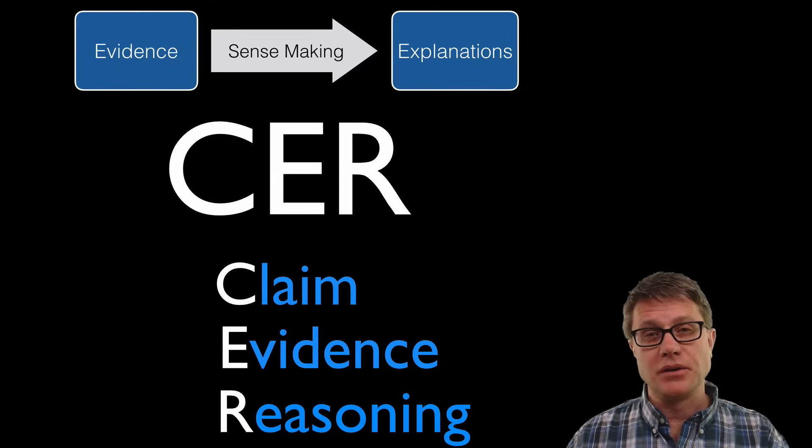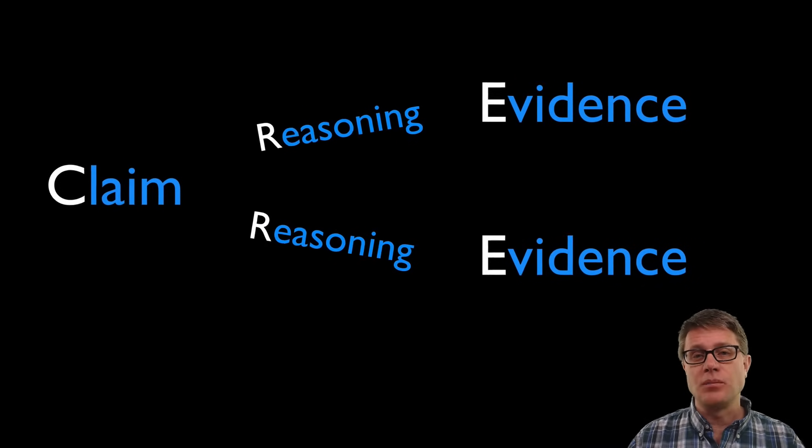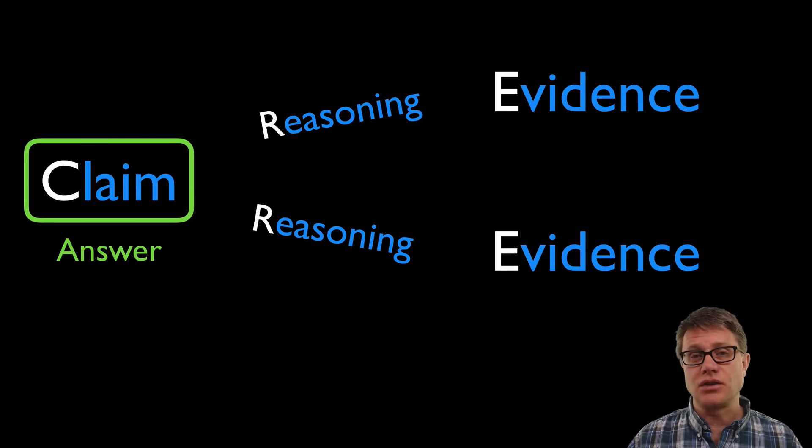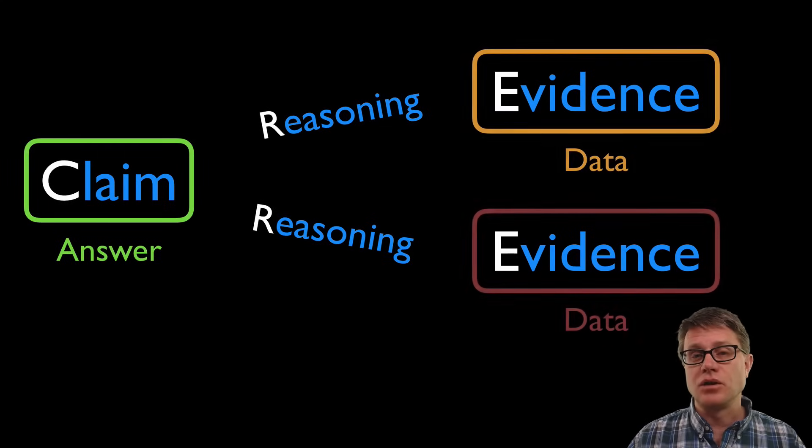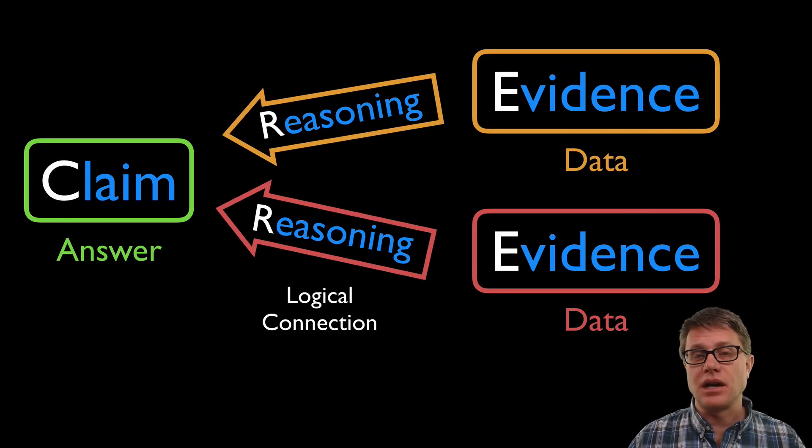Sometimes you'll hear rebuttal added at the end of that. That's looking at somebody else's claim, evidence, and reasoning. But this is my model for how claim evidence reasoning works. Claim is an answer to a question that's asked. Evidence is what you gather, empirical evidence that's gathered in the lab or through research. And then reasoning is a logical connection between the evidence and the claim that you're trying to make.